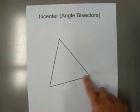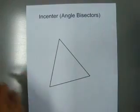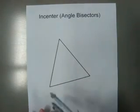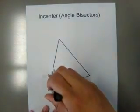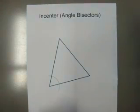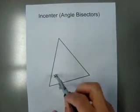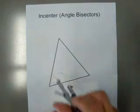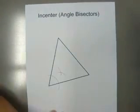Using this angle here as my first angle, I will find the angle bisector by making an arc, and then using those two points of intersection from the sides to make an X.